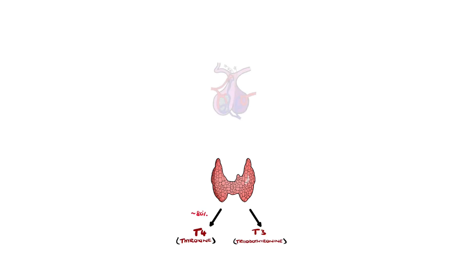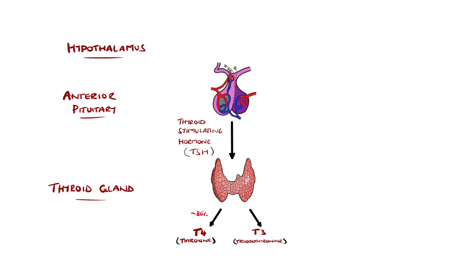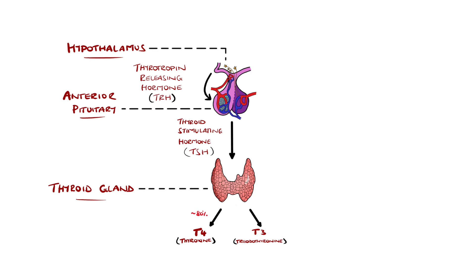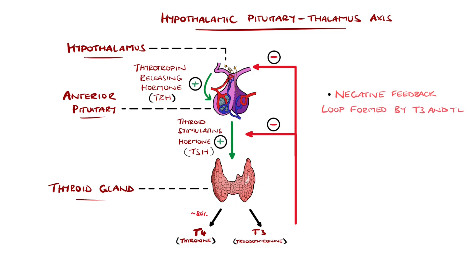The thyroid produces these hormones in response to thyroid stimulating hormone, TSH, which is produced by the anterior pituitary gland. TSH is released by the pituitary gland when stimulated by thyrotropin releasing hormone, TRH, coming from the hypothalamus. This chain forms the hypothalamic-pituitary-thyroid axis, with T3 and T4 having a negative feedback loop where they inhibit the release of TSH and TRH.